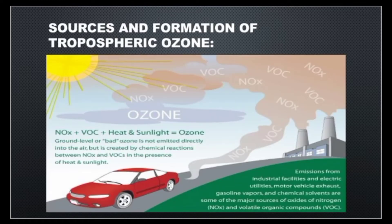Now we will discuss its sources and formation. Looking at the diagram carefully: NOx plus VOCs are reacting in the presence of heat and sunlight and they are forming tropospheric ozone, which is also known as bad ozone. Its sources include emissions from industrial facilities, electrical utilities, automobile exhaust, gasoline vapors, and chemical solvents — these are some of the major sources of oxides of nitrogen and VOCs.